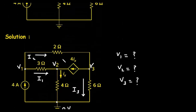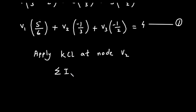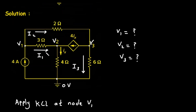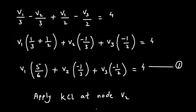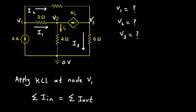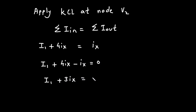Now we apply KCL at node V2. At this node, the entering currents are I1 and 4Ix, and the leaving current is Ix. So: I1 + 4Ix = Ix, which gives I1 + 3Ix = 0.